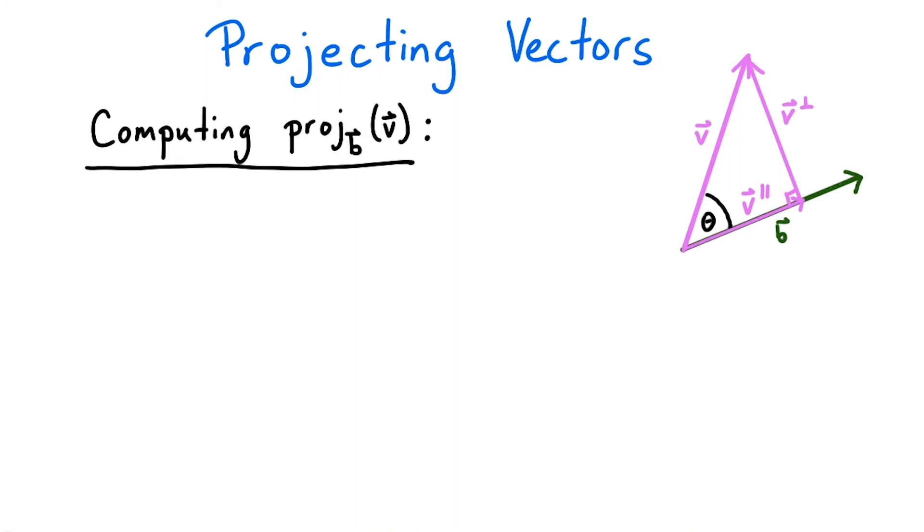All right, so is there a nice way to compute the projection of v onto the basis vector b? Let's start by making a simplifying assumption. Let's assume that the angle between v and b is at most 90 degrees.